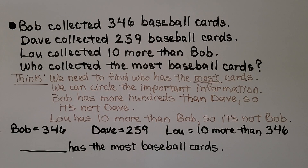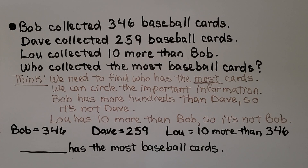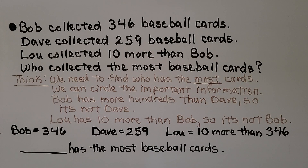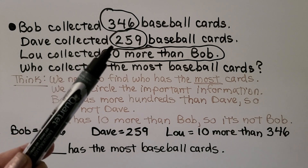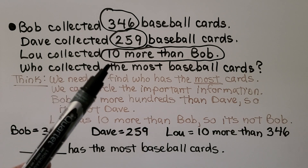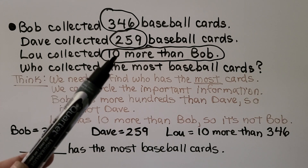Bob collected 346 baseball cards. Dave collected 259 baseball cards. Lou collected 10 more than Bob. Who collected the most baseball cards? We need to find who has the most cards, and we can circle the important information: Bob has 346, Dave has 259, and Lou has 10 more than Bob.